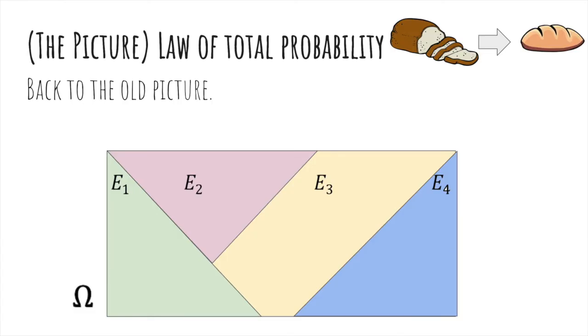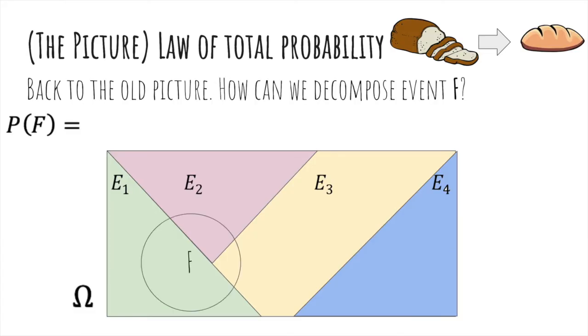Now we'll talk about the law of total probability. Here's an event F. How can we write probability of F into smaller chunks? Probability of F is composed of three parts: this green part, this pink part, and this yellow part.